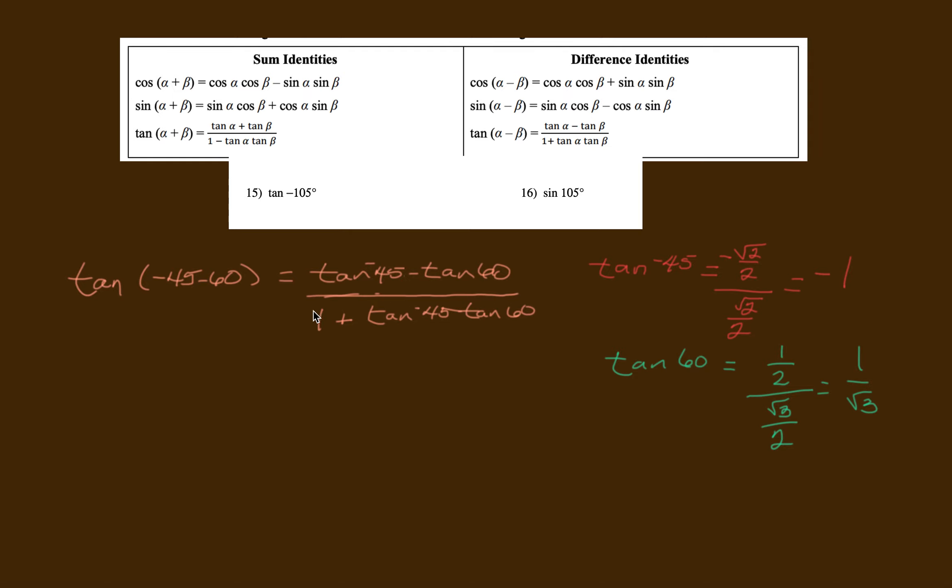Getting to the work at hand. Tangent negative 45, I solved that for you. I found that for you. It's just sine over cosine. Again, tangent 60, I did this down here. I found it to be 1 over root 3.